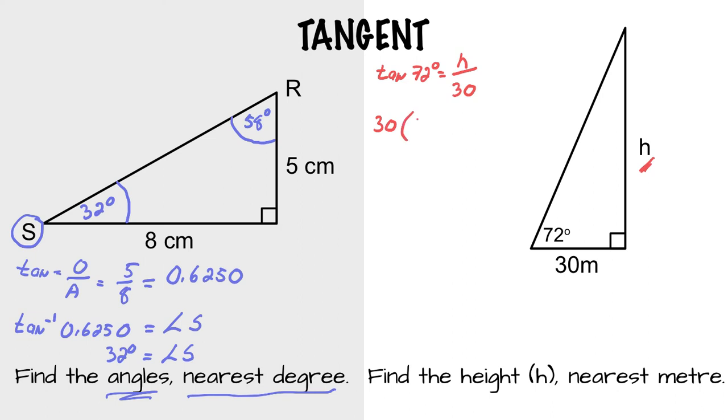We're going to find h in one step by using cross multiplication. So 30, I'm going to put this in brackets to make it really clean.